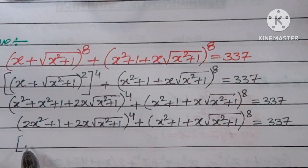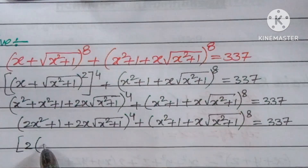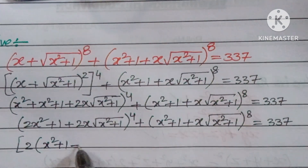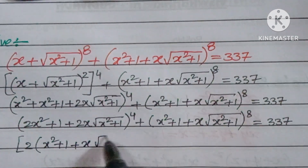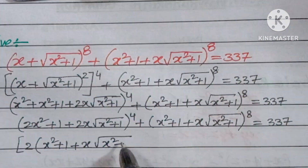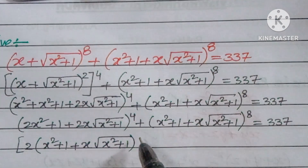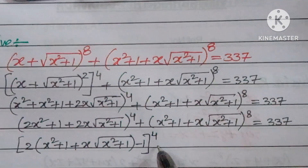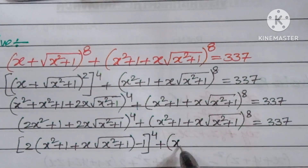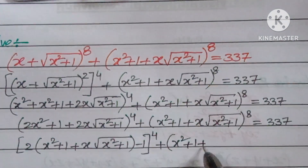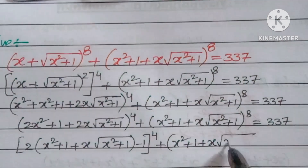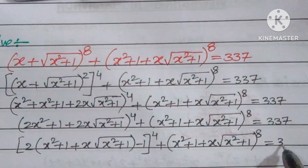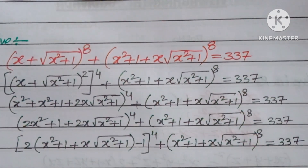Now observe that these two terms share a common structure. By adjustment, taking 2 as common: (2(x² + 1 + x√(x² + 1)) − 1)⁴ + (x² + 1 + x√(x² + 1))⁸ = 337.